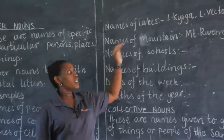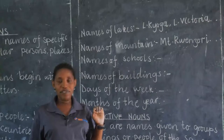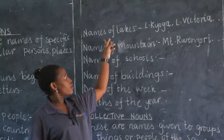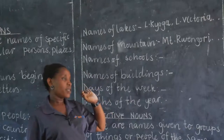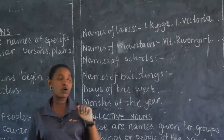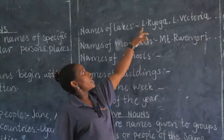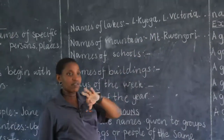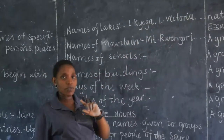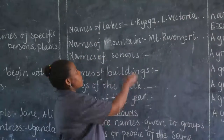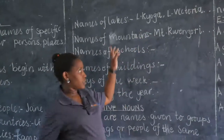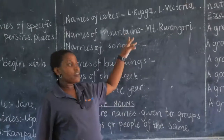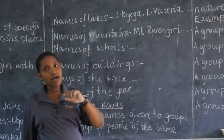Now we come to names of lakes. Uganda is a part of Africa and it has very good physical features, including very many lakes. When you are writing these lakes, begin with a capital letter. When you want to write Lake Kyoga, begin with capital L for Lake, then capital K for Kyoga. Lake Victoria, which is the biggest and is shared by the three East African countries, begins with a capital letter. Names of mountains like Mount Rwenzori, Mount Elgon, Mount Kenya, and Mount Everest also begin with a capital letter, because they are proper nouns.